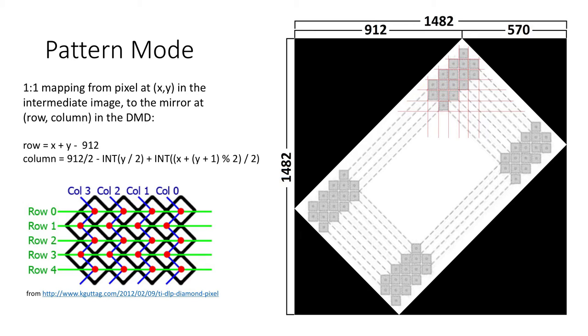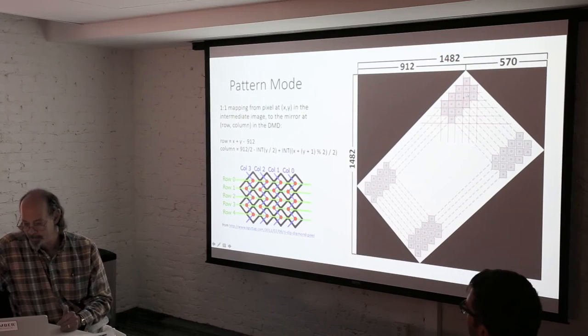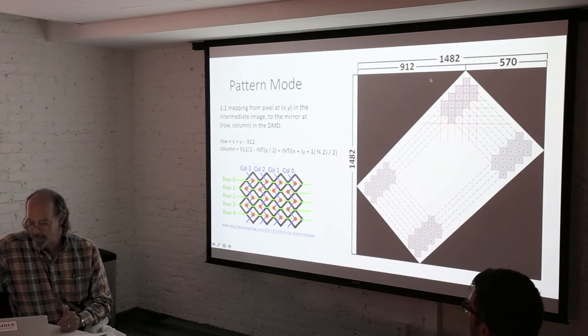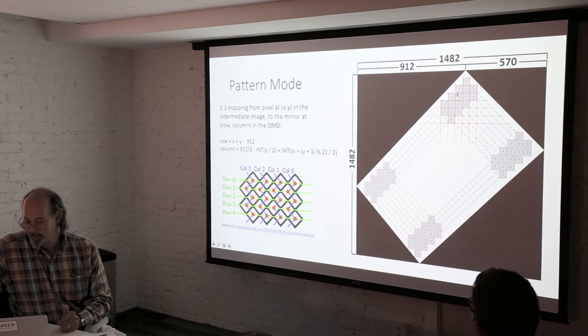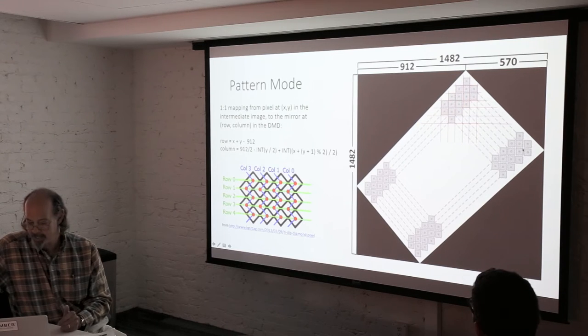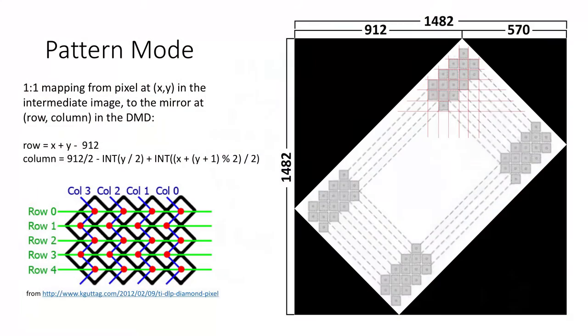So those correspond to the arrangement of our micromirrors in the DMD. So when we do this, now the micromirrors line up with our intermediate image. And then we can do a mapping from any pixel at x and y position in our intermediate image into a particular row and column in the DMD. Now they have this funny kind of zigzag arrangement to the columns. That's the way Texas Instruments chose to wire these up.